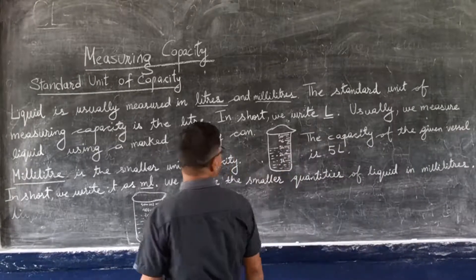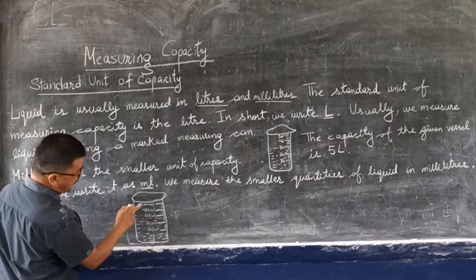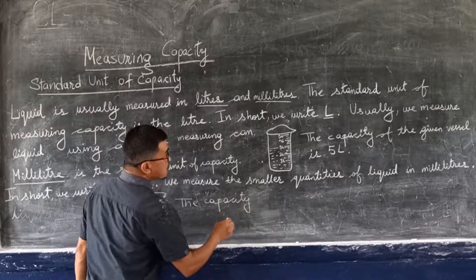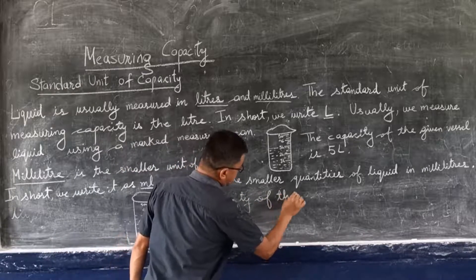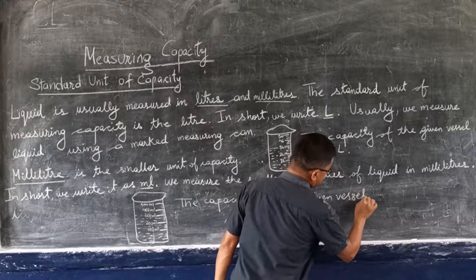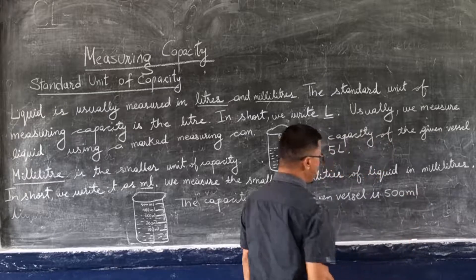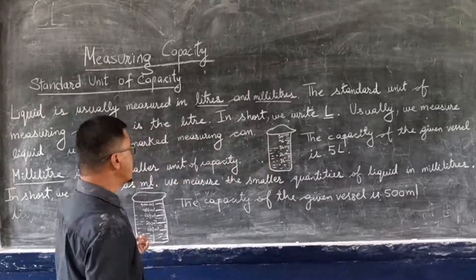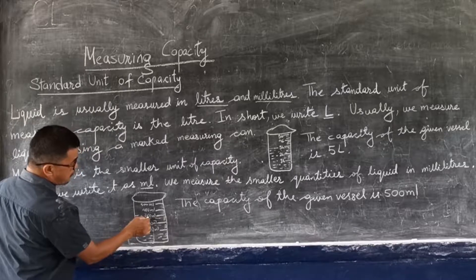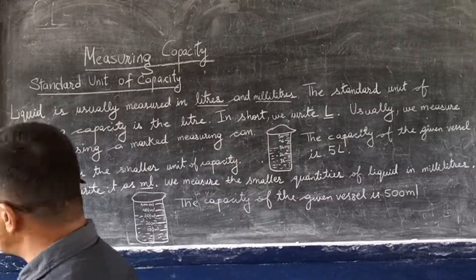Here, the capacity of the given vessel is 100 ml, 200 ml, 300 ml, 500 ml. So the capacity is 500 ml - it can measure up to 500 ml. In this measuring can, the liquid is at 300 ml. So these are the standard units of capacity.